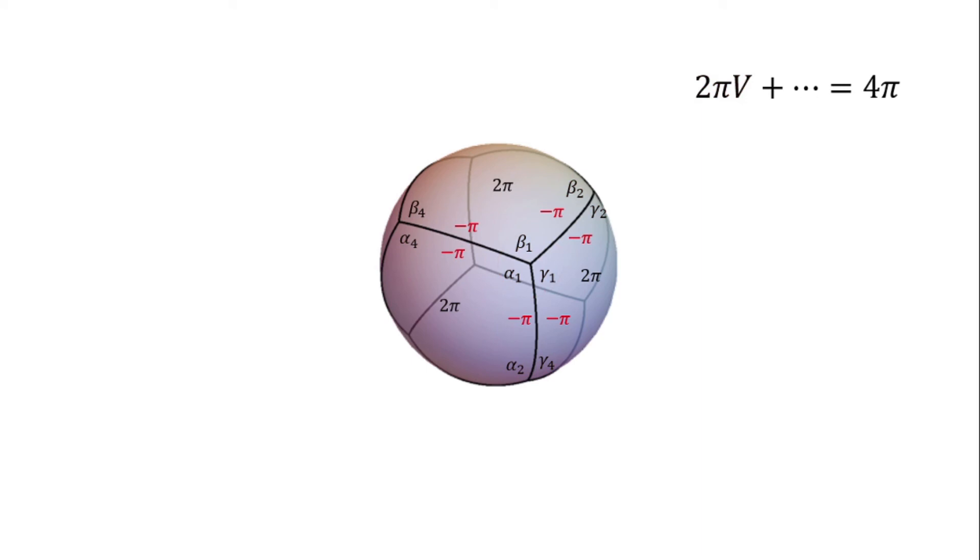Each edge belongs to two faces, so it contributes 2 times with minus pi, for a total contribution of minus 2 pi times e. Finally, each face contributes with 2 pi to the area, totaling a 2 pi times f contribution to the formula. The only thing left to do is dividing both sides by 2 pi to get the Euler formula for polyhedra. V minus e plus f equals 2.